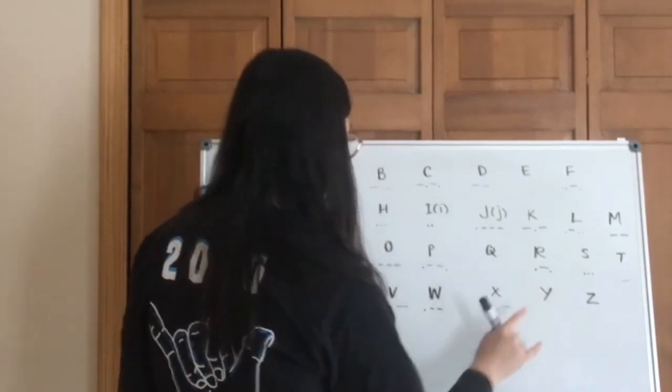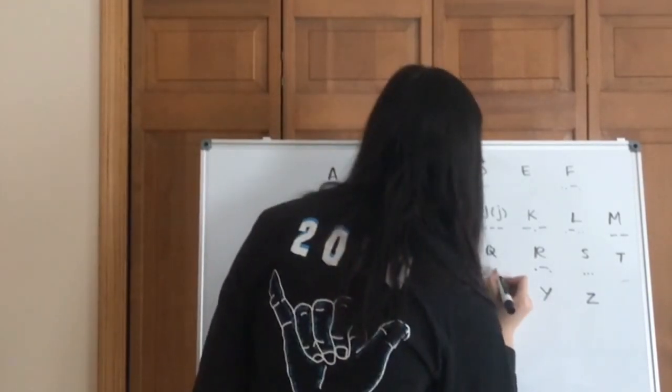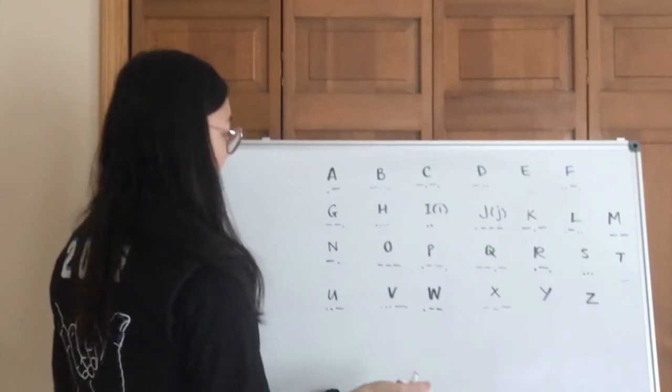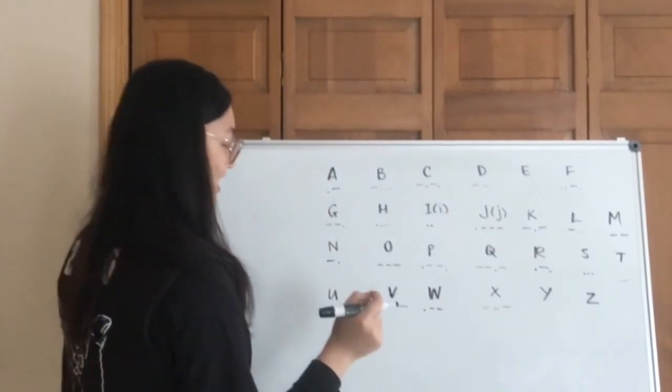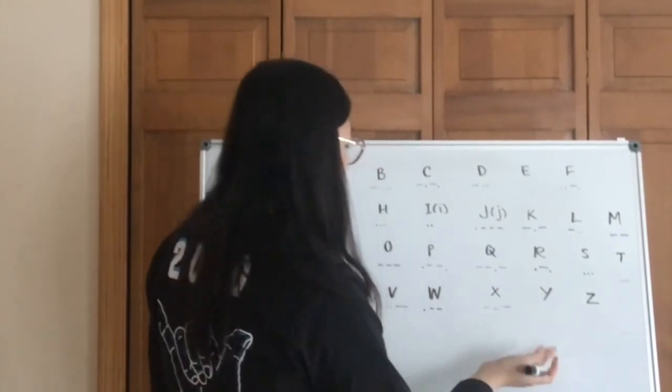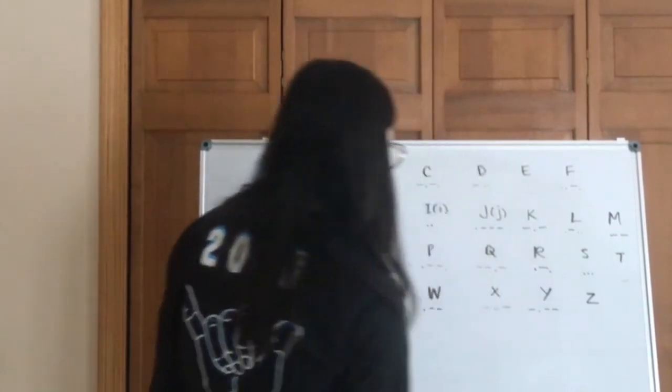And then Q and Y are inverses. Q is dash dash dot dash. Kind of see it as this dot is the little leg that's kind of kicking up there. And then Y is the mirrored version of Q, so it's dash dot dash dash.